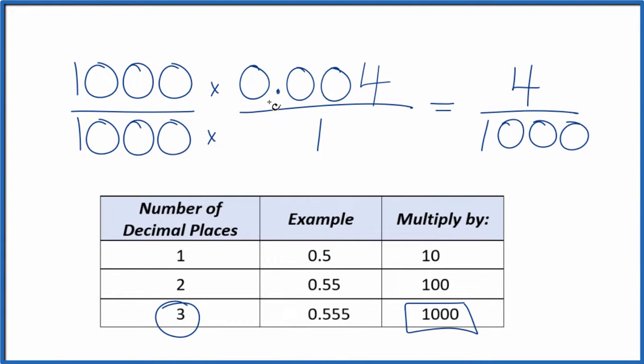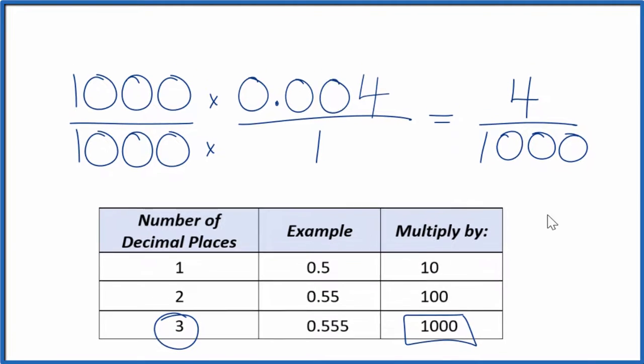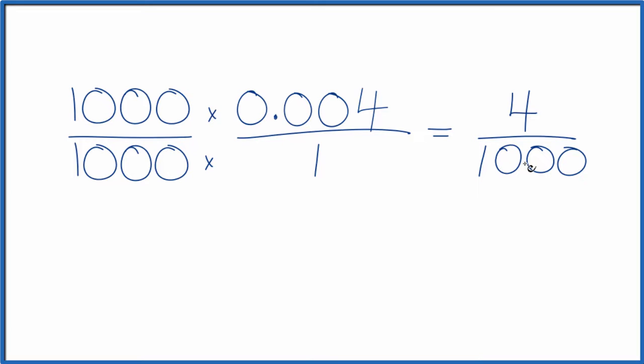So we've converted the decimal 0.004 to the fraction 4 over 1,000. But we can reduce this further. Let's do that. So 4 goes into 1,250 times. Let's just say 4 divided by 4 equals 1, and 1,000 divided by 4, that equals 250. That's our fraction in simplest terms. So we've converted the decimal 0.004 to the fraction 1 over 250. And these are equivalent.